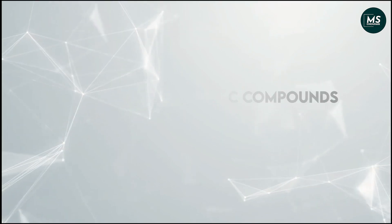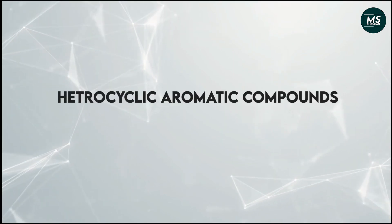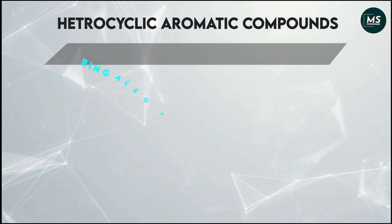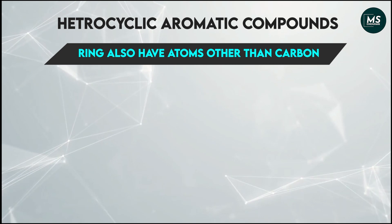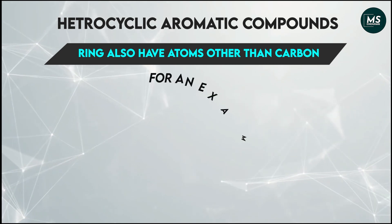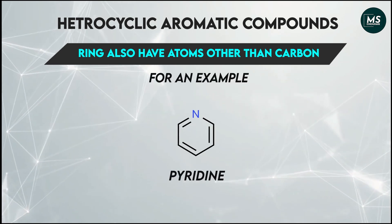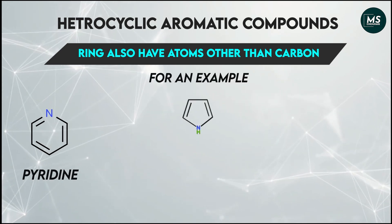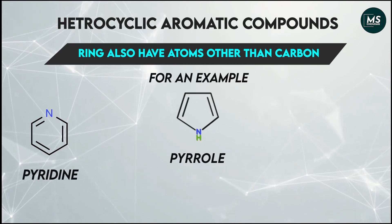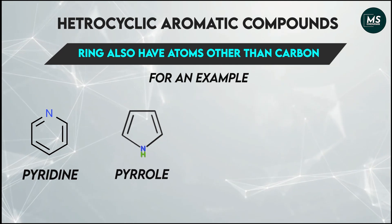Next are heterocyclic aromatic compounds. In these aromatic compounds, the cyclic ring also contains other atoms in addition to carbon. We can see this in these examples.